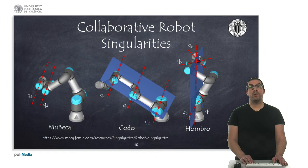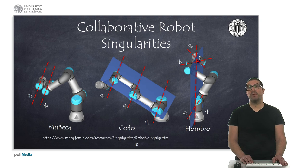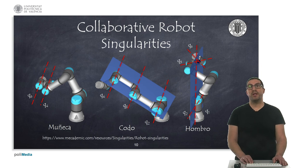In a similar way, collaborative robots also have singularities. The wrist singularity occurs when axes four and six are parallel, while the elbow singularity occurs when axes two, three and four are contained in the same plane. The shoulder singularity occurs when the point at which axes five and six intersect is contained in the plane formed by axes one and two.